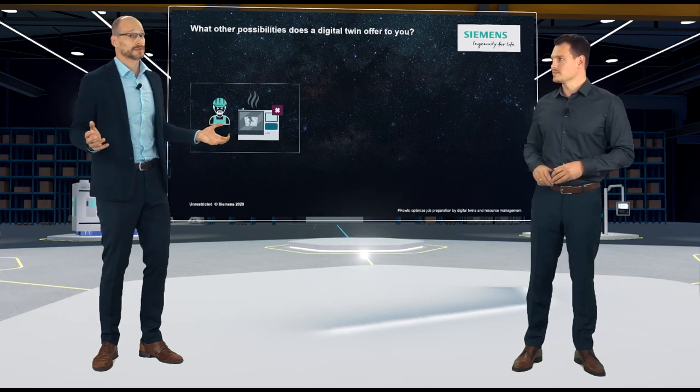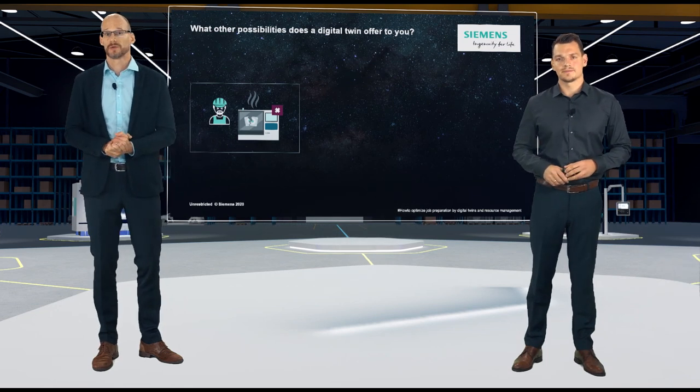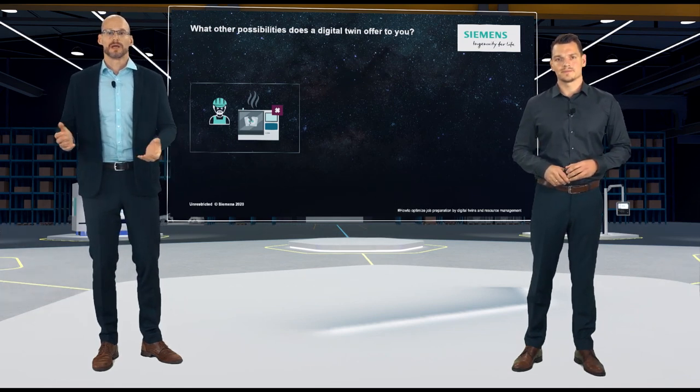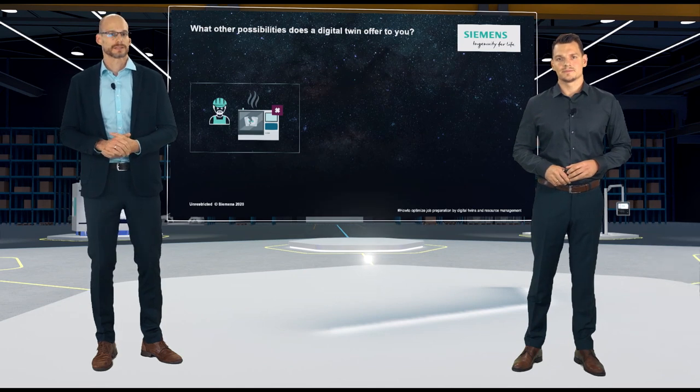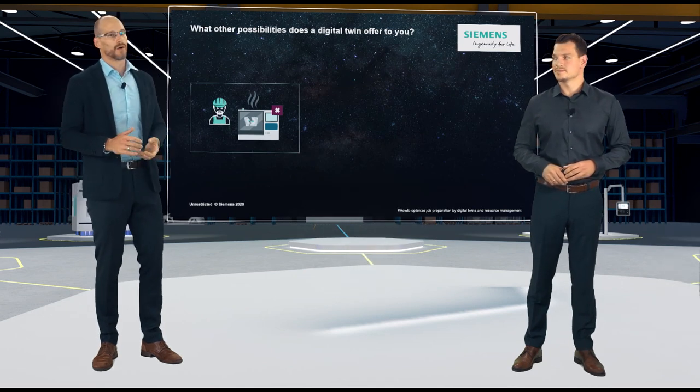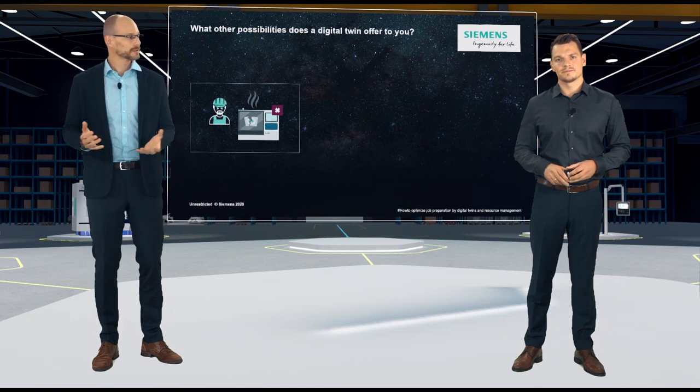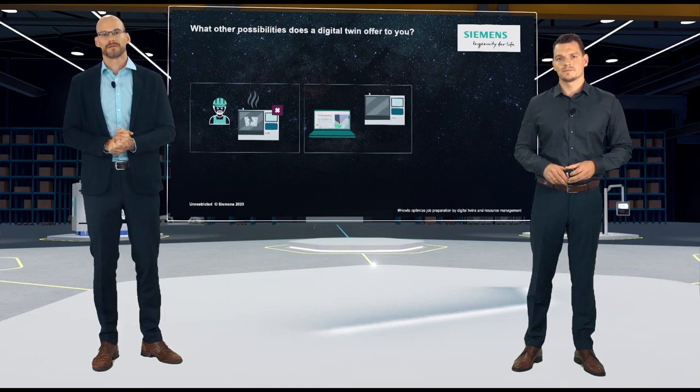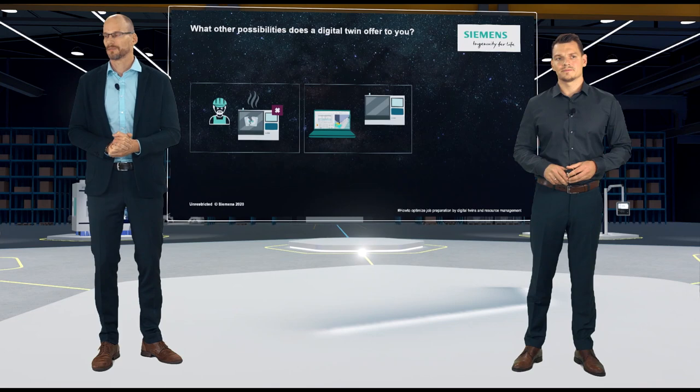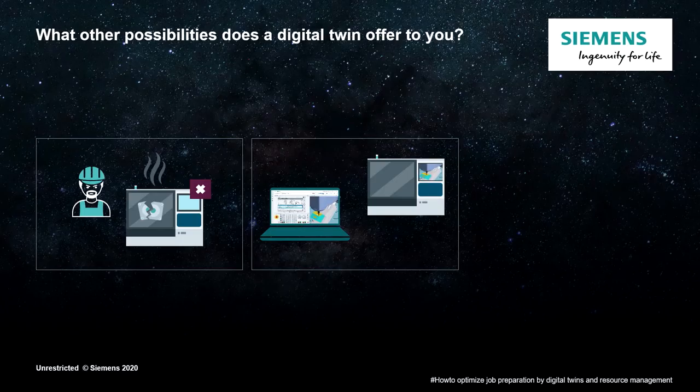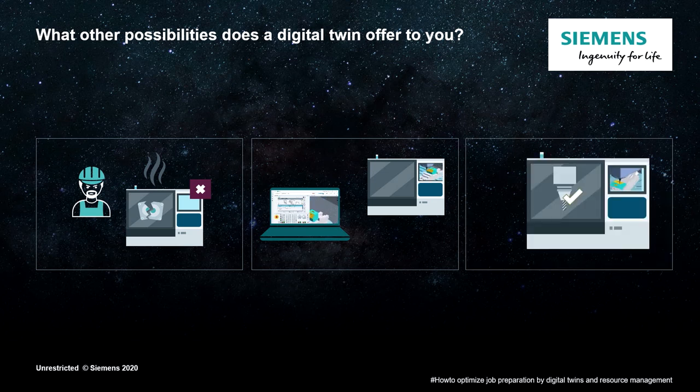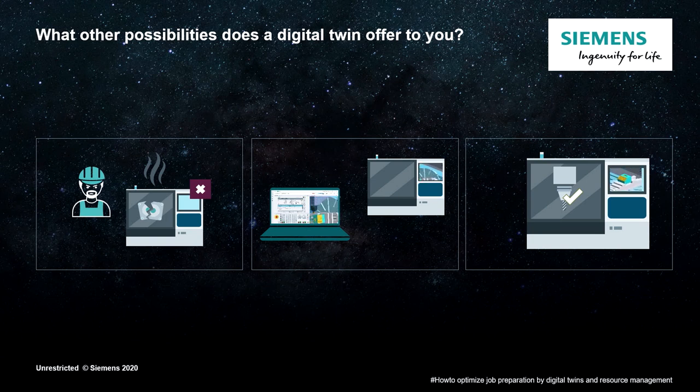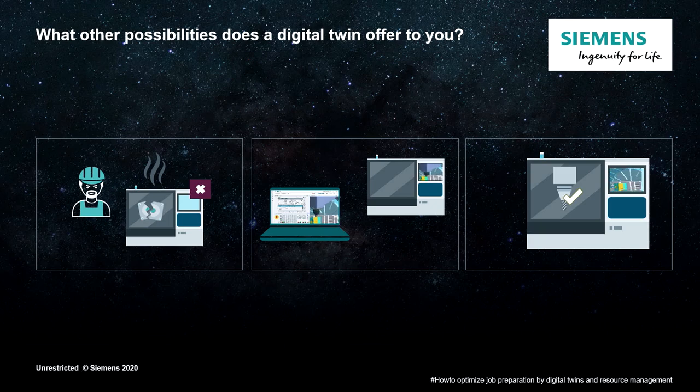Sometimes there are situations on the machine that cannot be simulated in advanced. For example, if a machine operator interacts directly in the workspace or moves axes in jog. Wouldn't it also be fine if the familiar simulation from Run My Virtual Machine could also run online on the machine to avoid collisions? Then, the previously created clamping situations and setups could be taken over directly on the machine and can be reused to protect the machine with Protect My Machine 3D Twin.